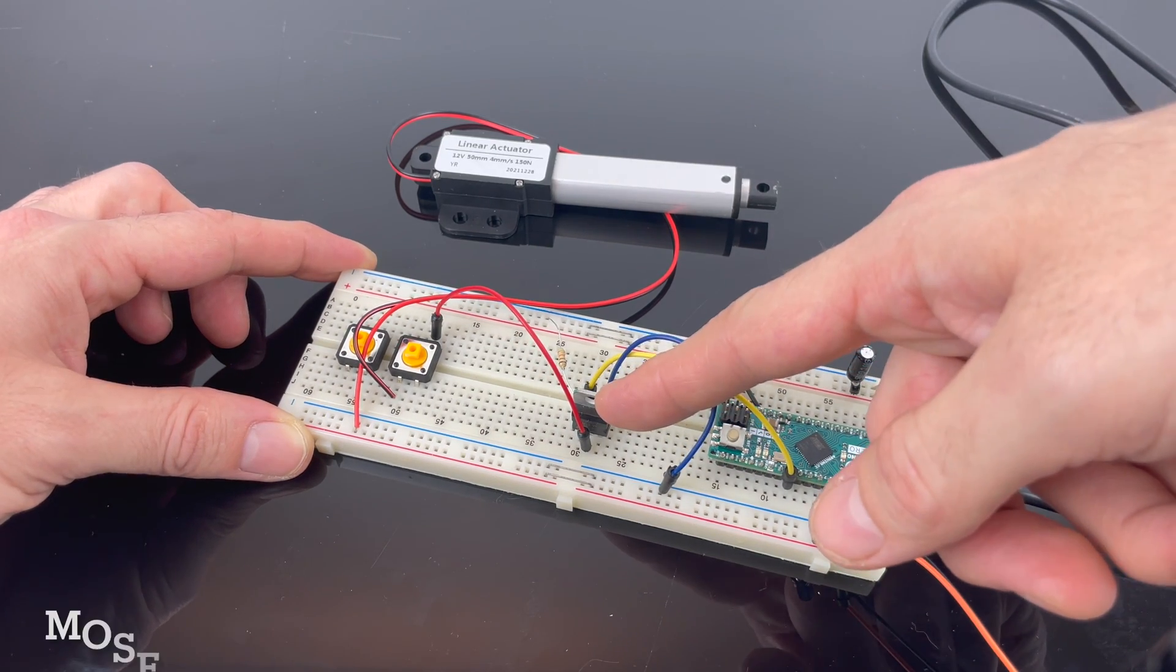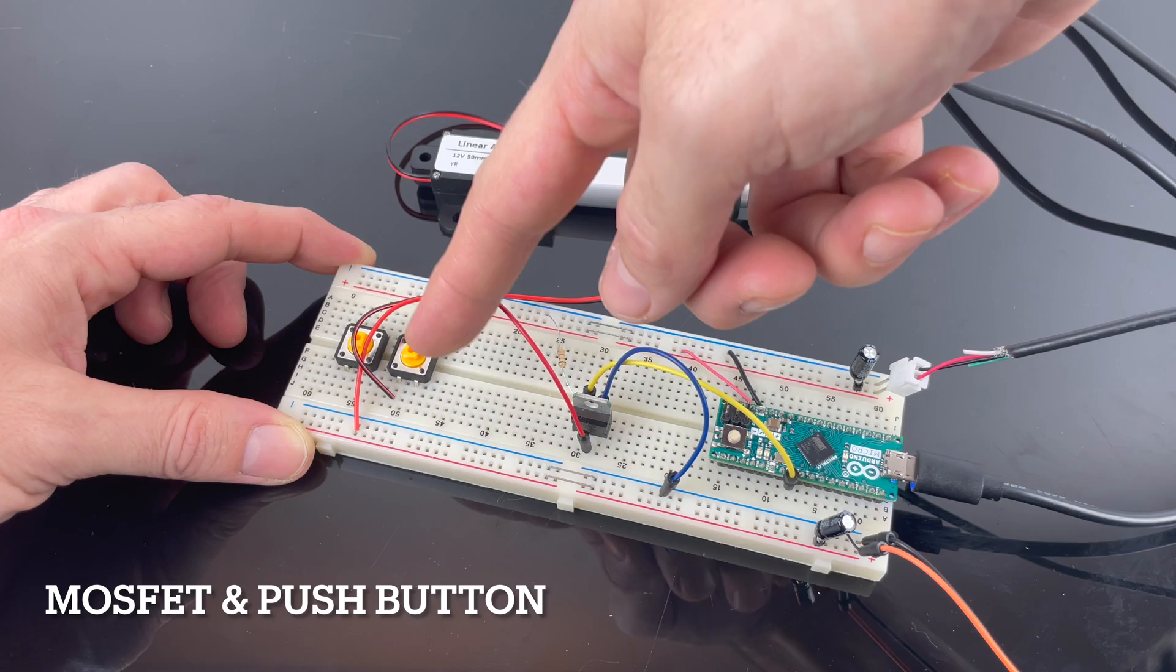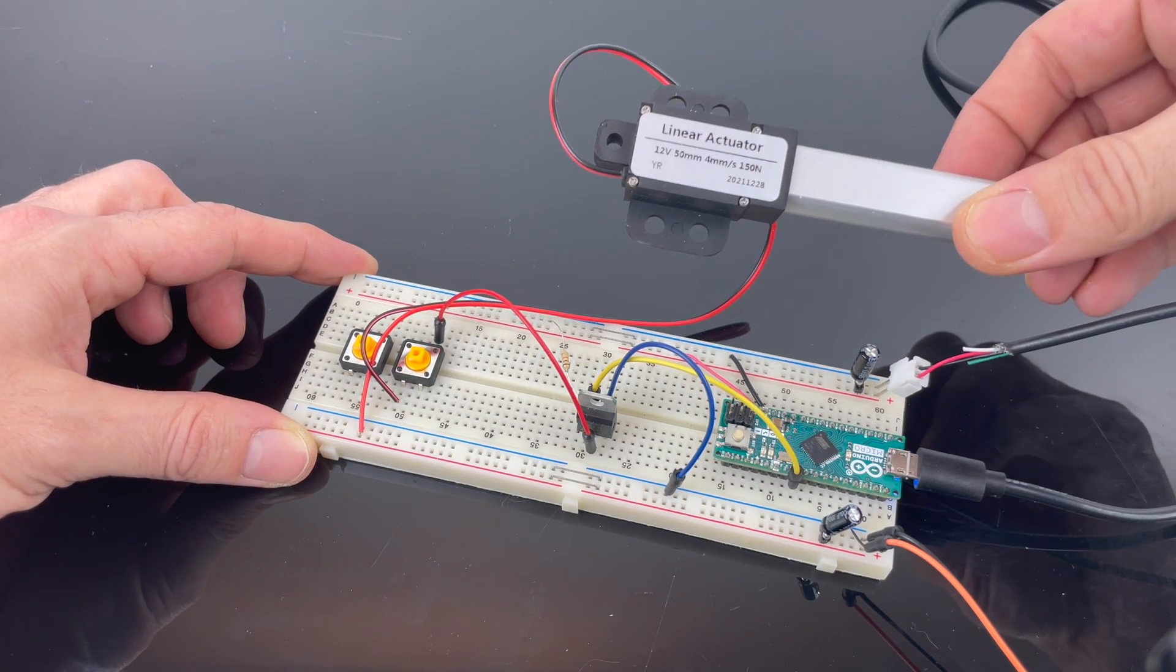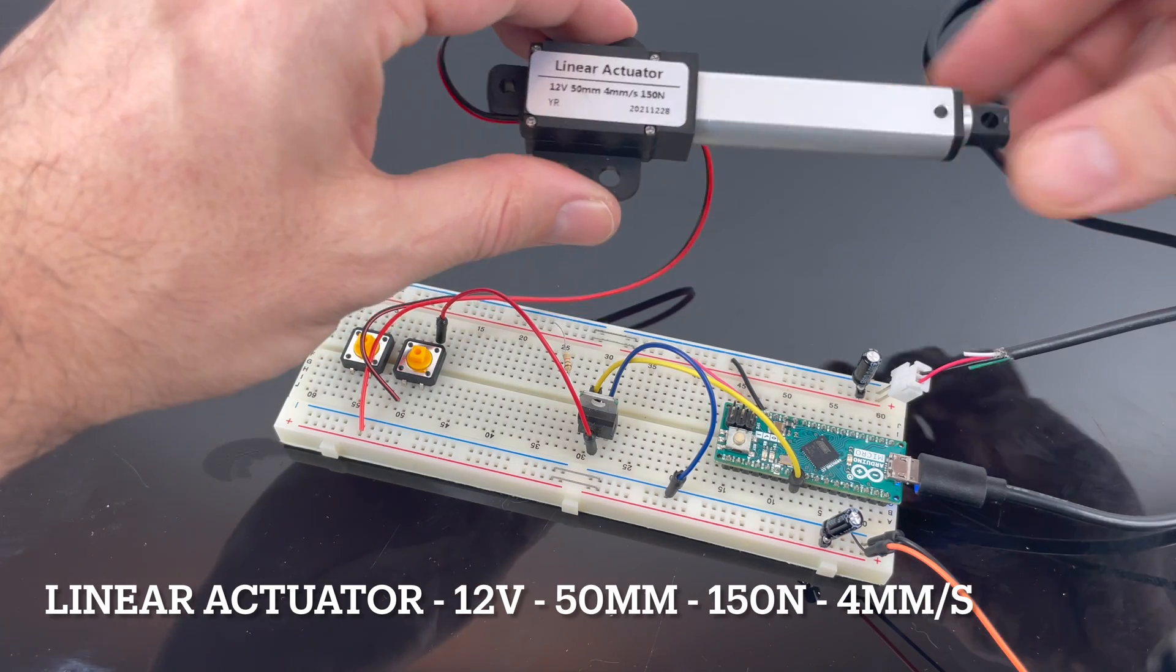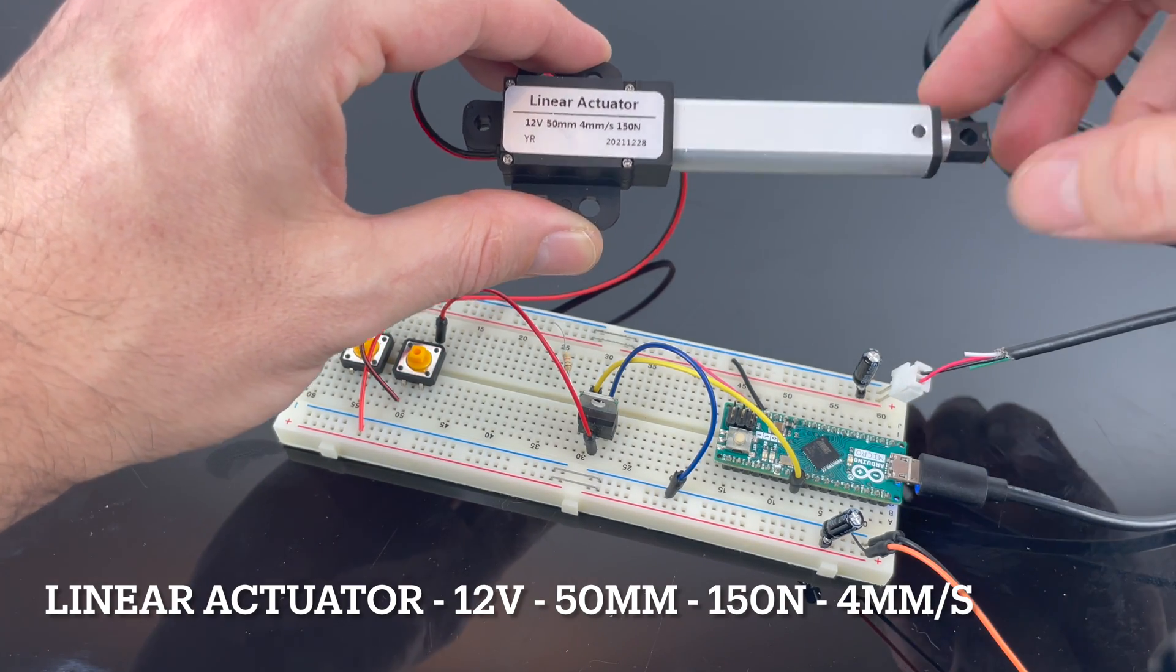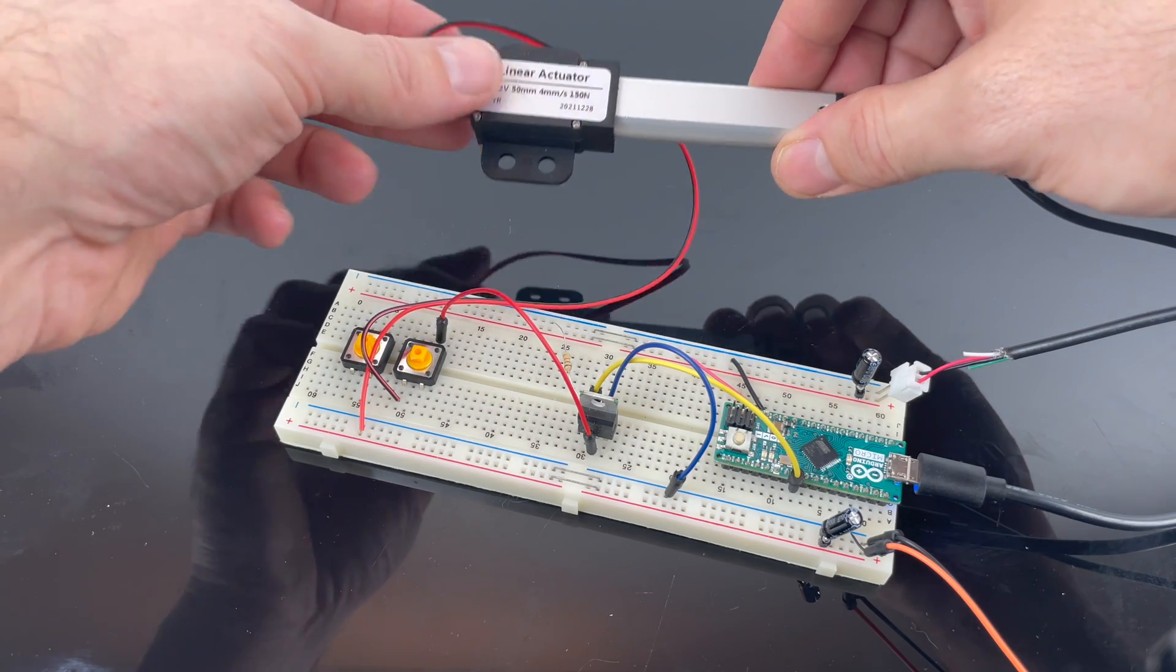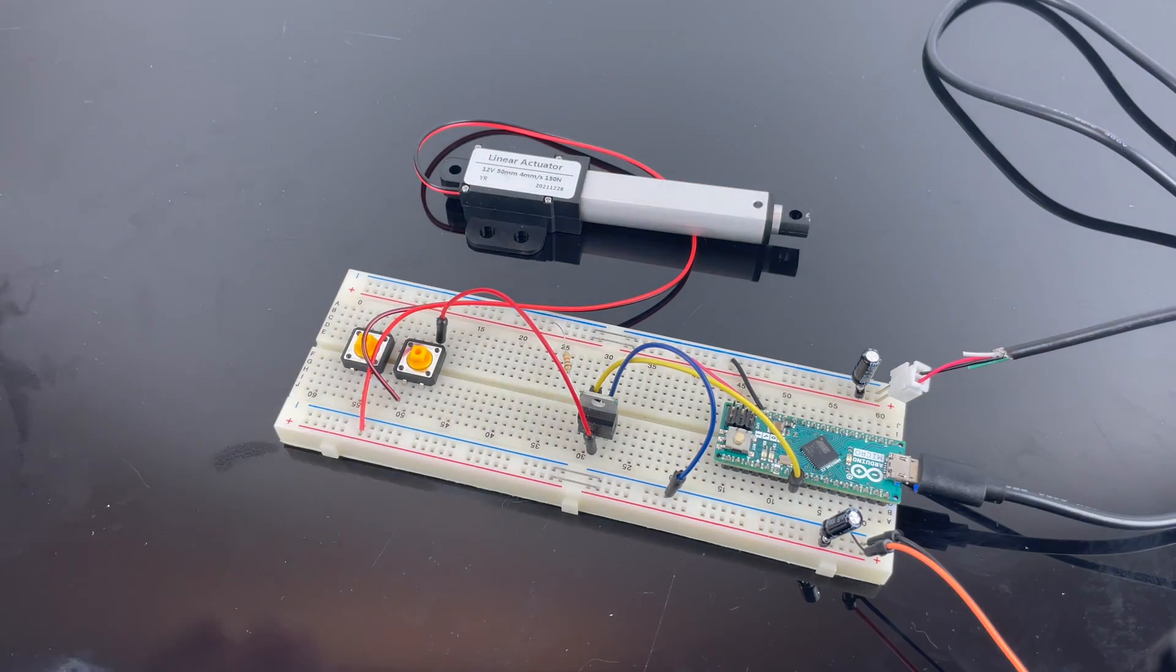Over here we got the MOSFET and then we just have a regular button. Now the linear actuator I'm using is a 12 volt, it's a 50 millimeter one and it moves 44 millimeters per second and it has a push and pull of 150 Newton which is about 15 kilogram force.